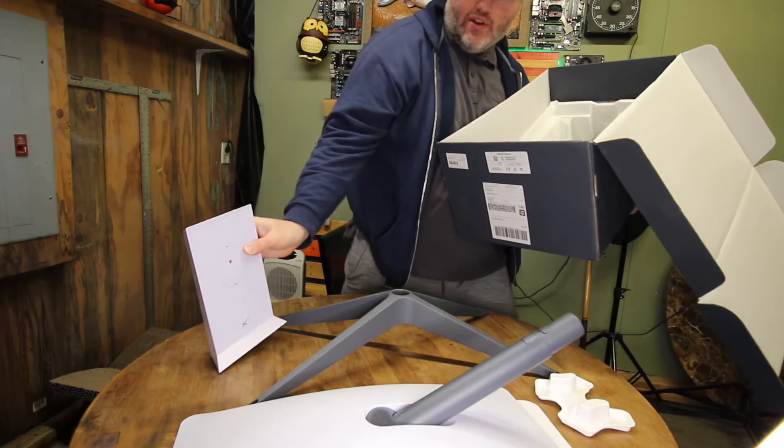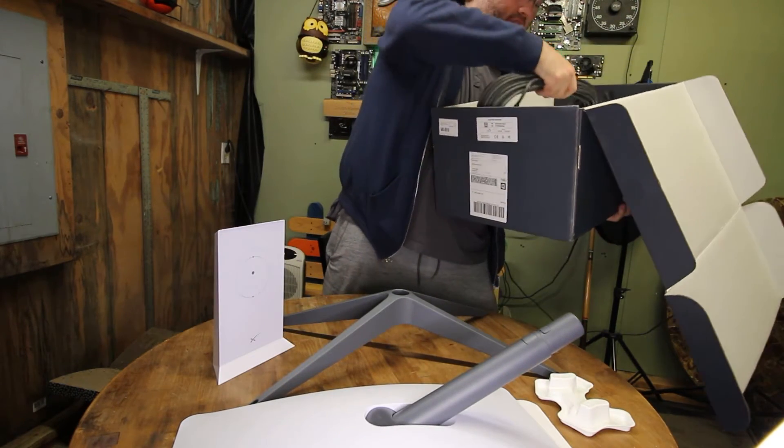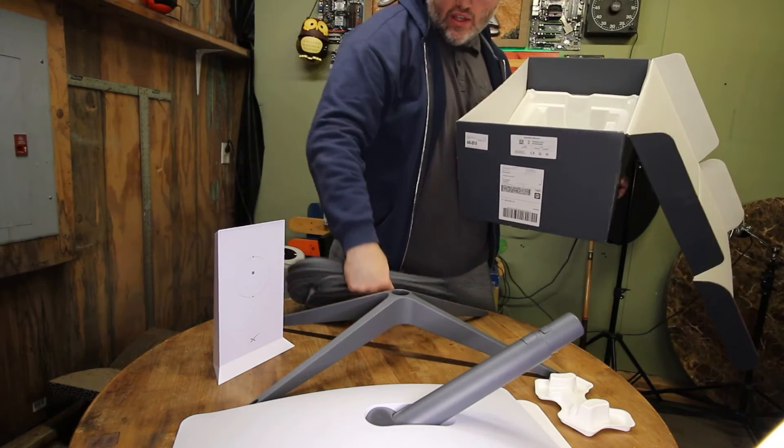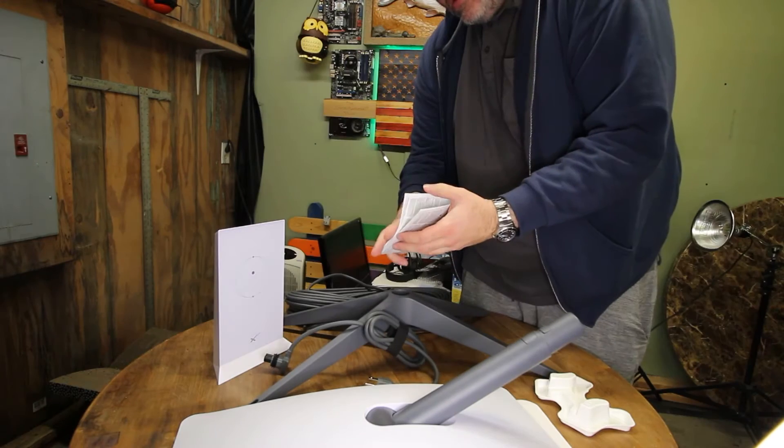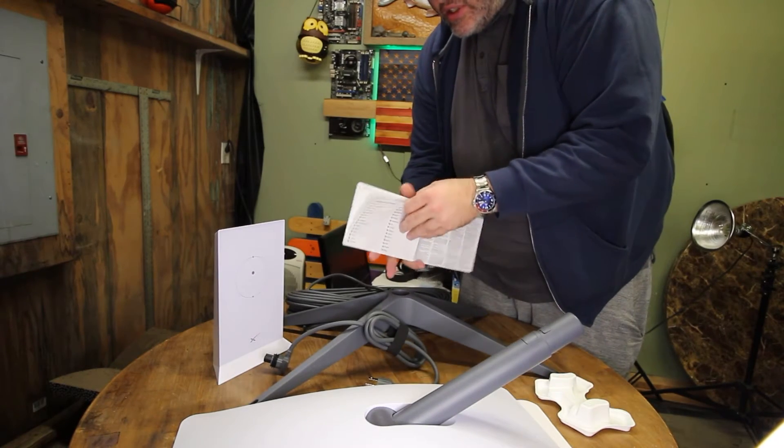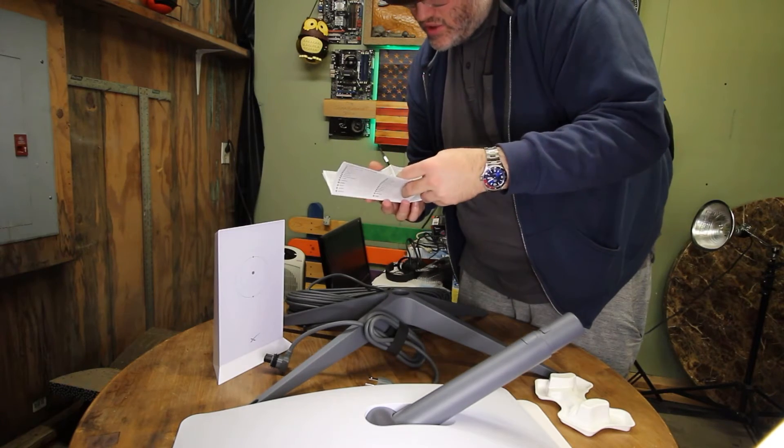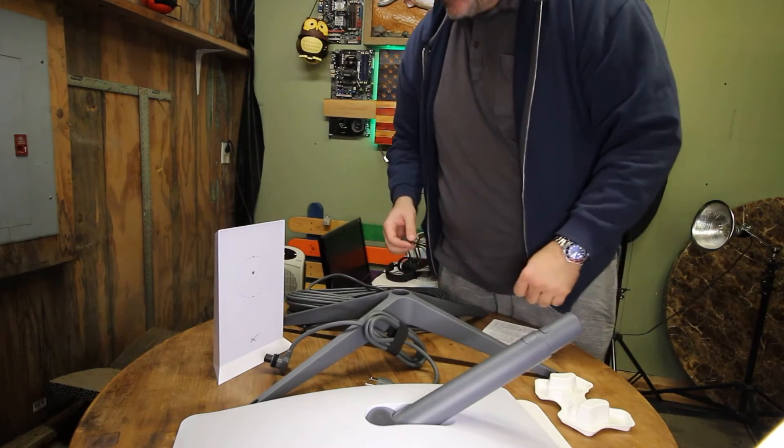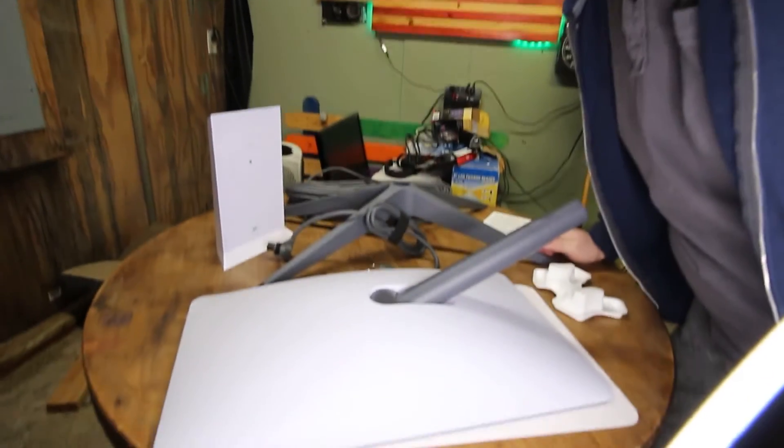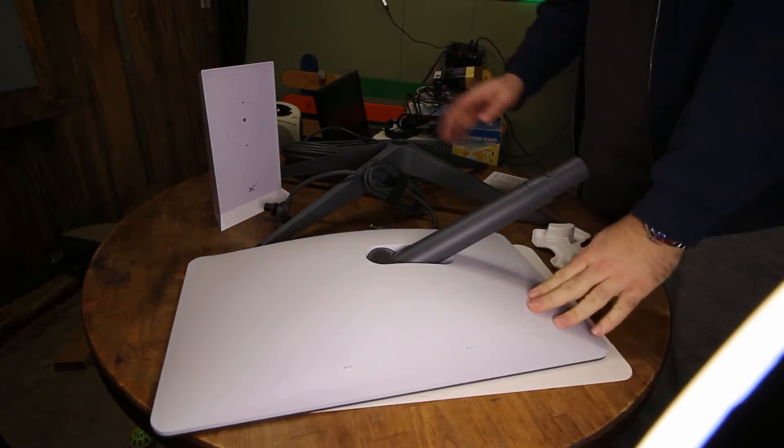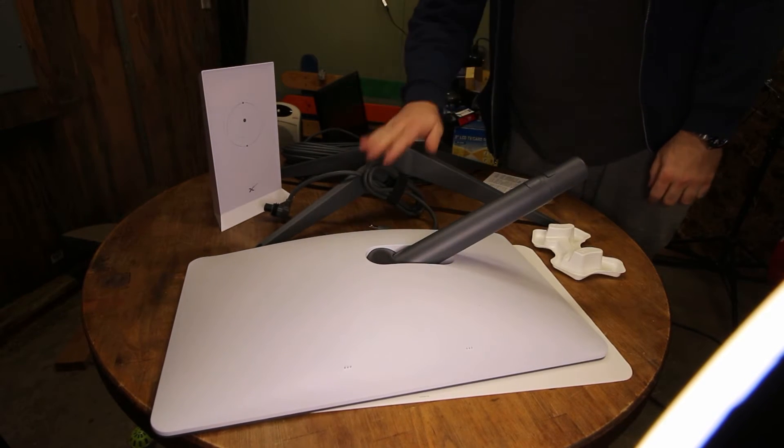So we got the Starlink router, 75 feet of cable, power connector, regulatory notices in various languages. All right, so this is everything that it comes with. Dishy, metal stand, 75 feet of cable, power cable, and router.